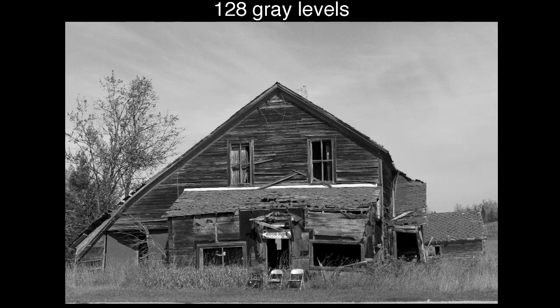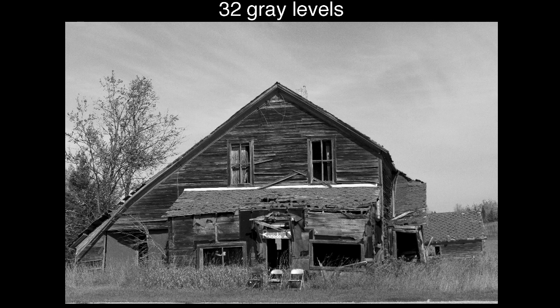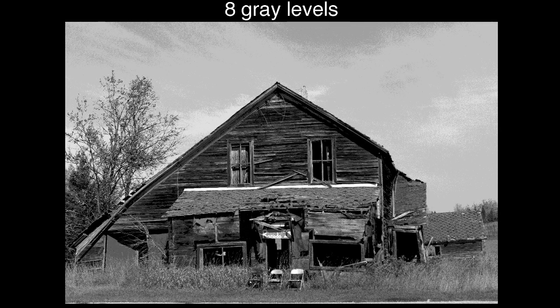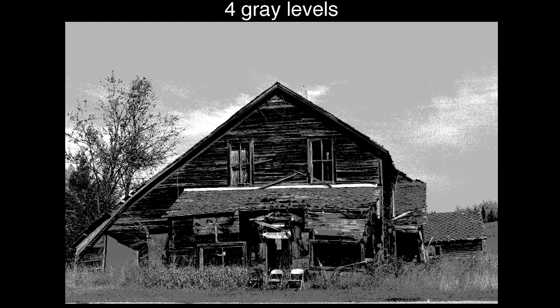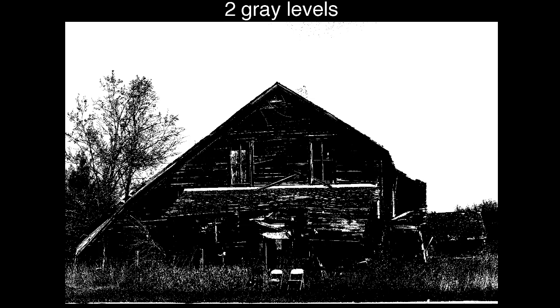Here's a black and white image of an old house that uses 128 gray levels to encode its intensity. Here's what it looks like with 64 gray levels — hard to see much of a difference. It's still hard to see much change at 32 gray levels. But with only 16 levels, we start to see some changes in the sky, and those become more pronounced when we reduce to only 8 levels. At 4 gray levels, the photo is clearly distorted. But even with two gray levels, the image is still somewhat recognizable.